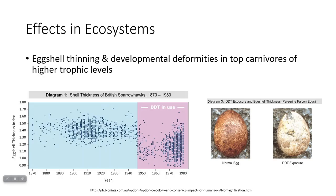One of the big things Rachel Carson, author of Silent Spring, brought attention to was that increased exposure to persistent organic pollutants like DDT caused the eggshells of various birds — especially top predators like eagles, condors, and hawks — to become thin. Birds sit on eggs to incubate them, and thin shells are more likely to break, preventing the baby from surviving. A graph showing eggshell thickness in British sparrowhawks confirms that once DDT came into use after the mid-1940s, eggshell thickness significantly decreased.